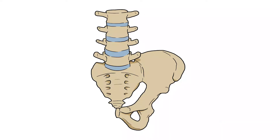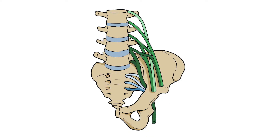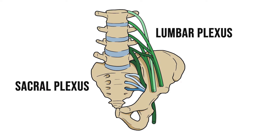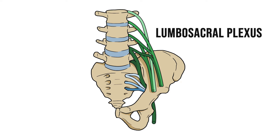In the first video we looked at some nerve theory. In this video I'm going to start applying that theory to the nerves of the lower limb. The nerves supplying the lower limb originate from nerve roots L1 to S3. Fibres from these nerve roots will head out to form lumbar and sacral plexuses, and we can group them together as the lumbosacral plexus.